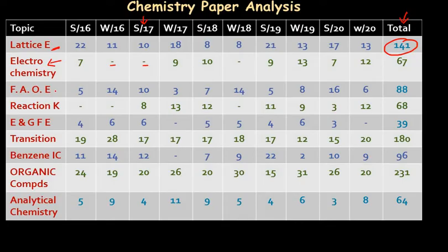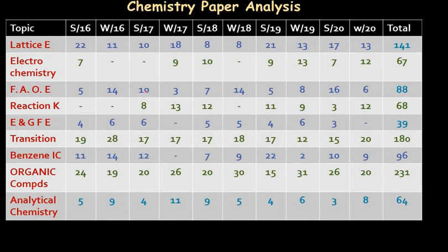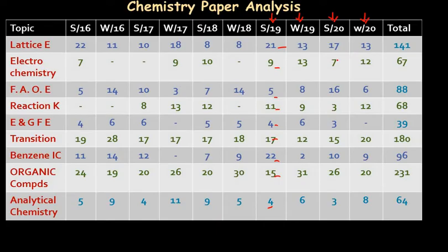You can see that there are few chapters from which questions are asked every year — those topics are very, very important. Some chapters have only two dashes, meaning they were skipped in only two years, but most of the time they are asked, so consider them very important topics. Also notice that in the last two years — the 2019 and 2020 papers — questions from each and every chapter were asked, showing that equal weightage was given to every chapter.